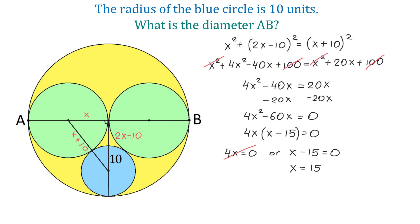So we found X, and now, to find the diameter AB, we will multiply X by 4. So AB equals 4 times 15, which equals 60. So the diameter of the yellow circle is 60 units. Thank you for watching.